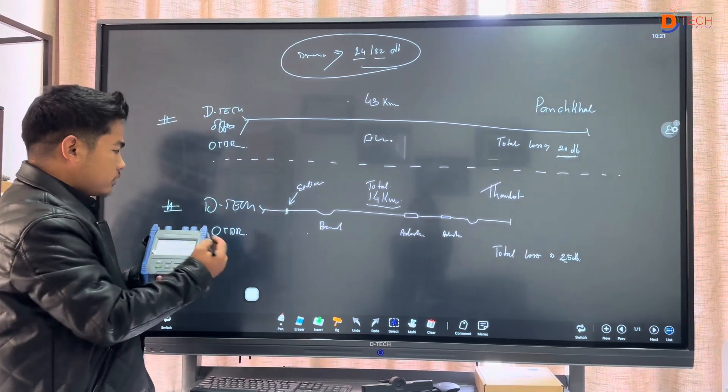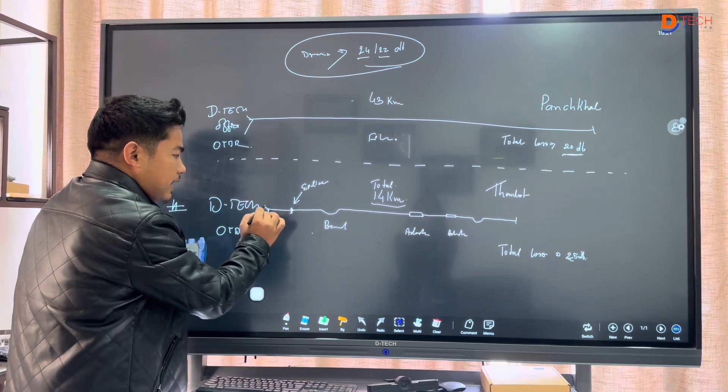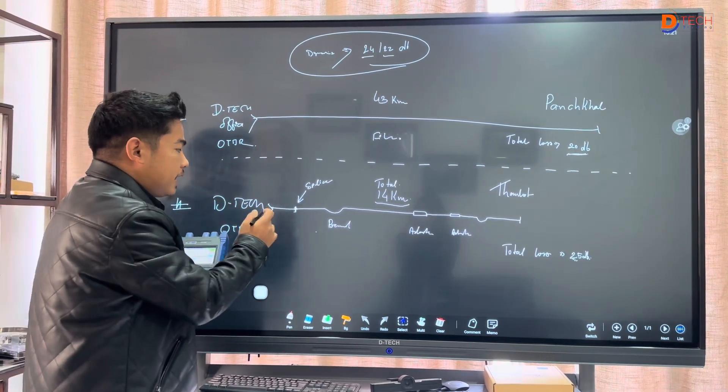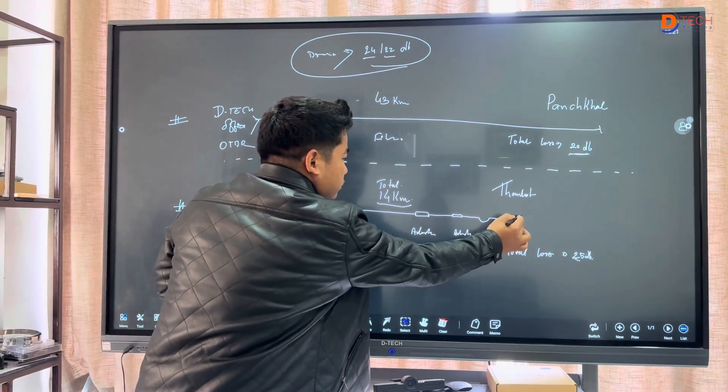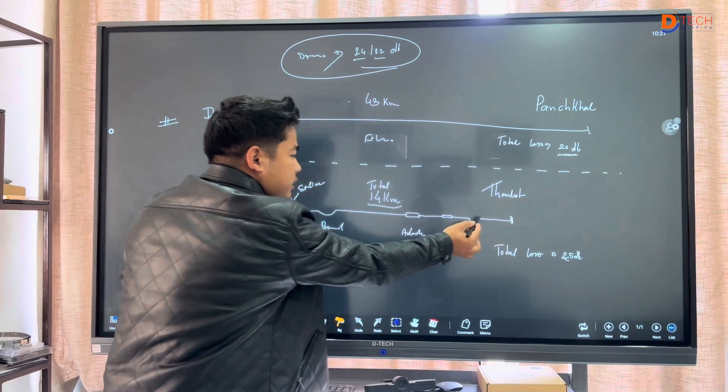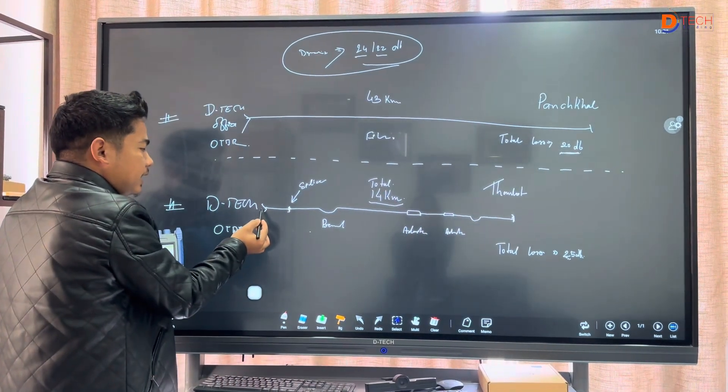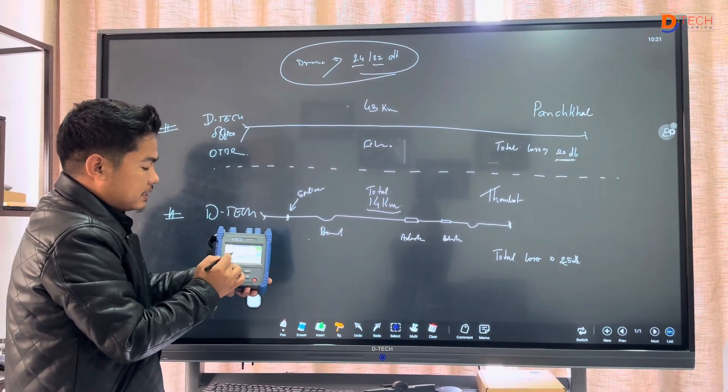The OTDR function works with lasers. The laser light is sent into the fiber. When you have a joining point, you need to check it. The device converts the optical signal to an electrical signal, which is then displayed on the screen.